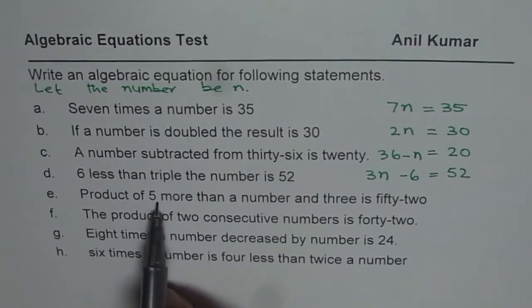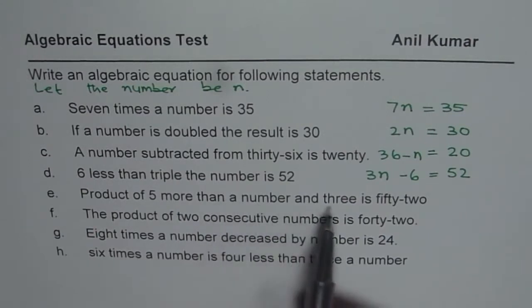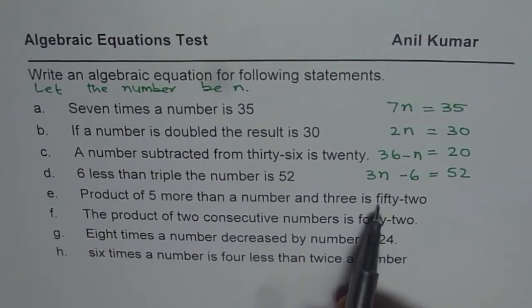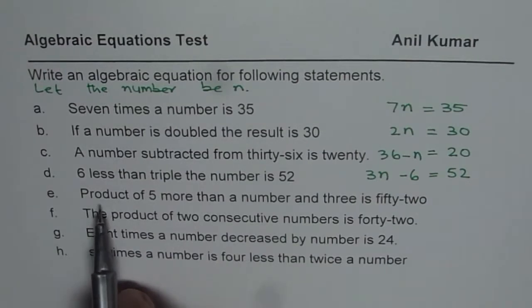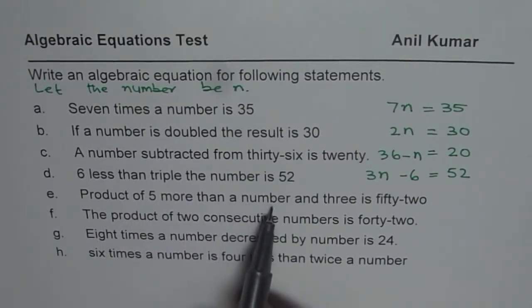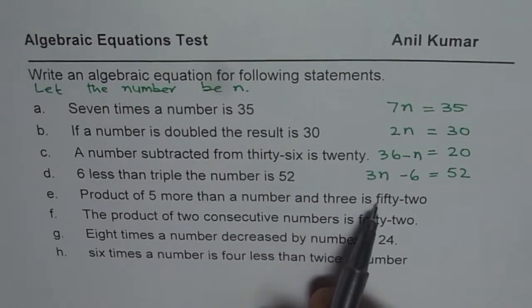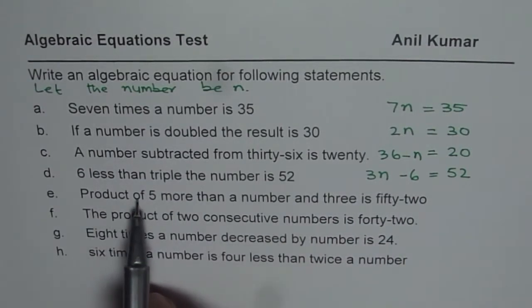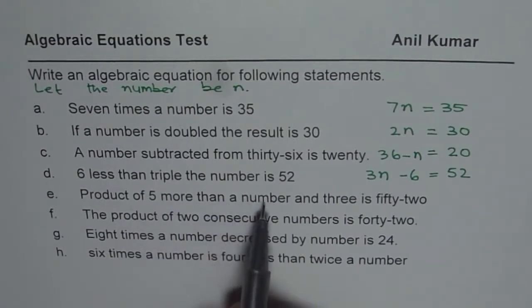Now we have, product of 5 more than a number and 3 is 52. So let's read it again. Product of 5 more than a number and 3 is 52. I hope you got it. Product of 5 more than a number, so number plus 5.